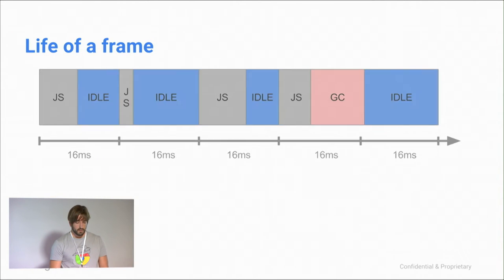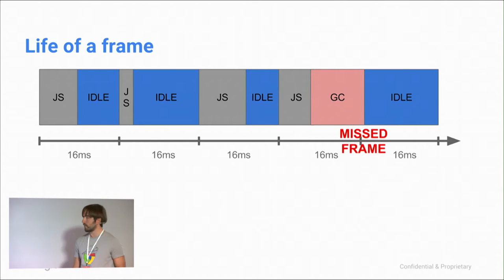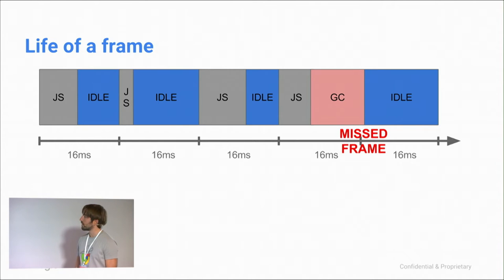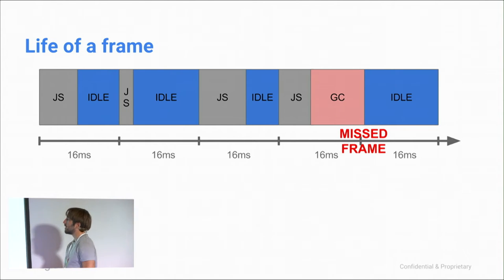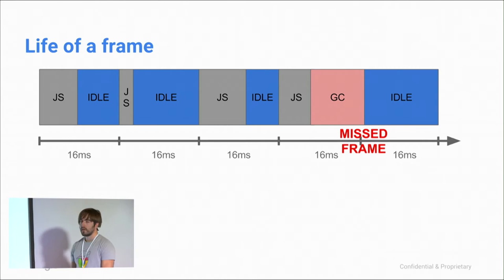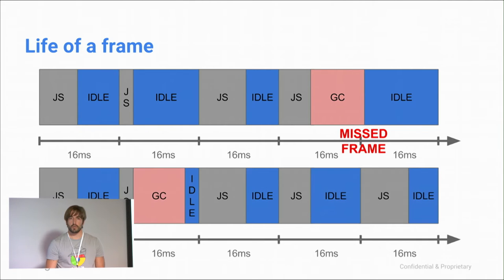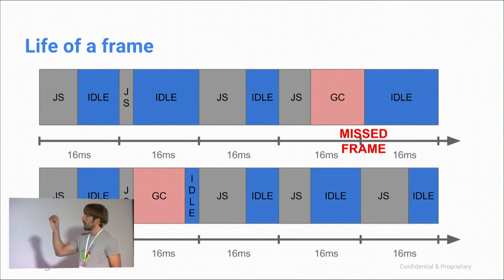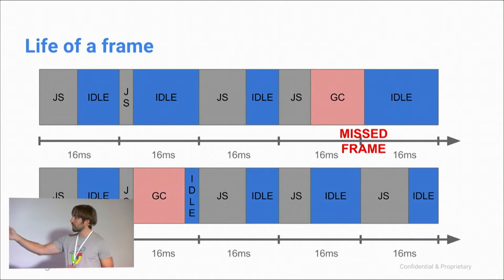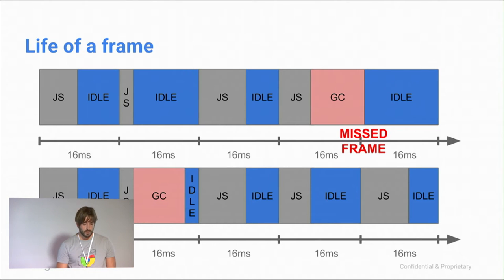If we could schedule garbage collection before, during that idle time, everything would work out great — no jank, no missed frames. To do this, we need quite some instrumentation in V8. We basically need to know how long each garbage collection event takes. So we started measuring all garbage collection components — scavengers, incremental marking events, finalization — and came up with performance counters telling us how long scavengers take on average per megabyte of heap, how long marking takes per megabyte, and the same for finalization.